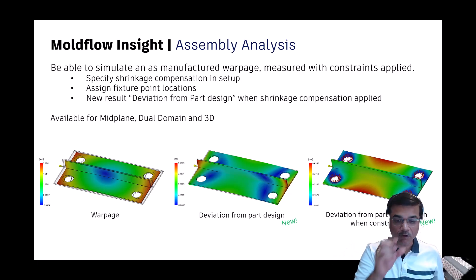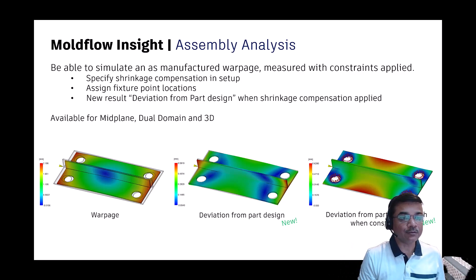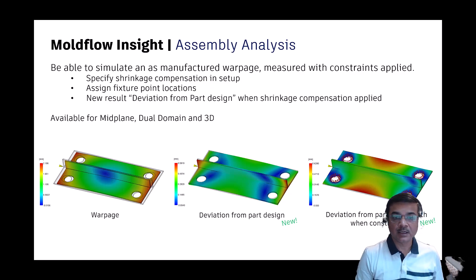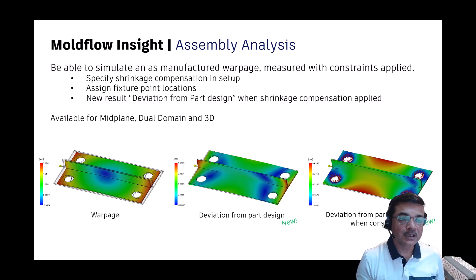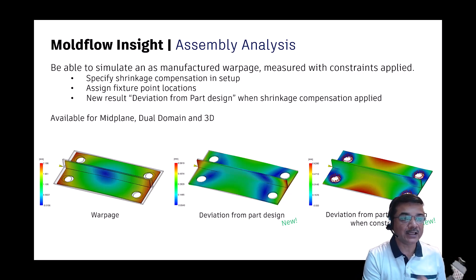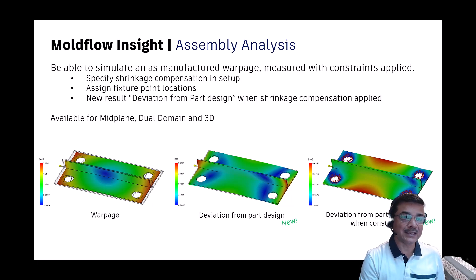To set up this process, you need to be on the warpage page. On the warpage page you will find assembly analysis. You also need to specify the shrinkage compensation in the setup — you can get this value from the toolmaker or refer to your material database file, which defines the average value. That is only an indication value; if you need to be very specific, you have to research and consult with different stakeholders to put in a precise value.